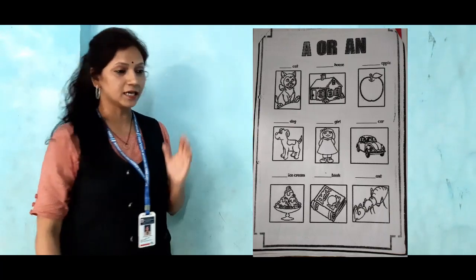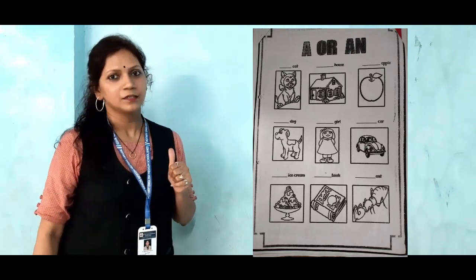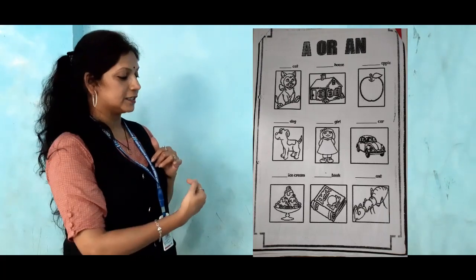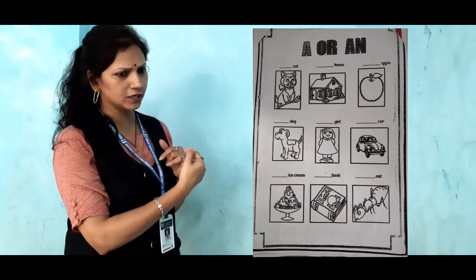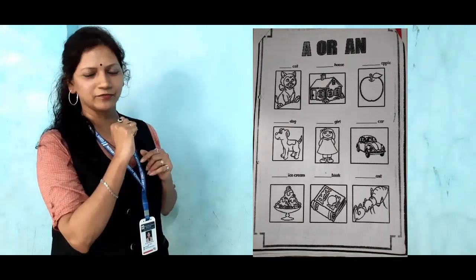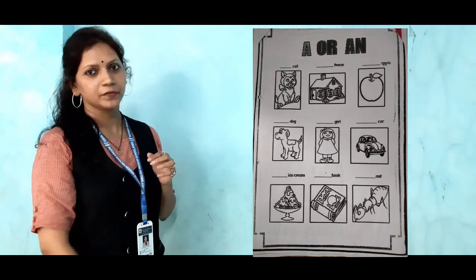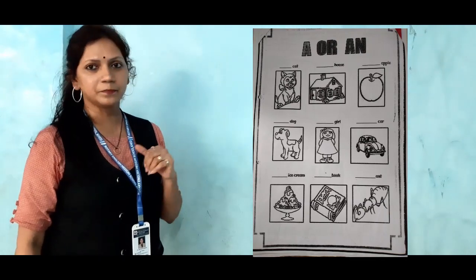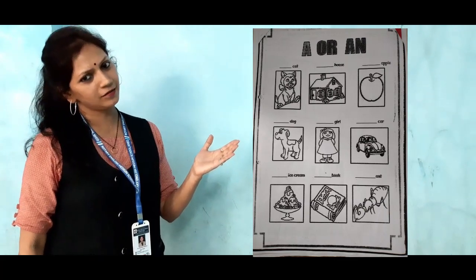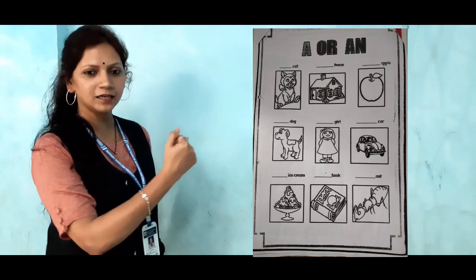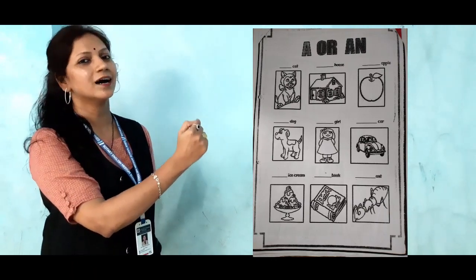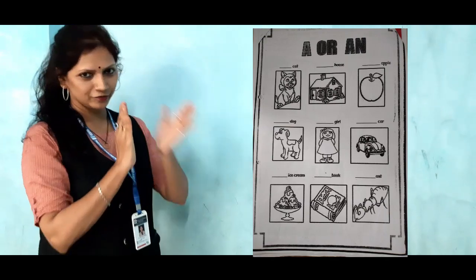Now next picture — who will answer me? Shri Dharani. D is a consonant. So, Shri Dharani, what to use here? Exactly, you are a very good girl. So A — a duck. Next picture is a girl. G is a consonant. So here you have to use a girl. Very good.